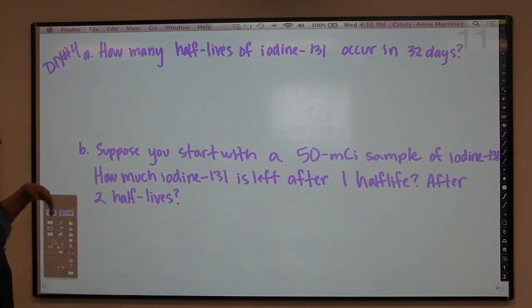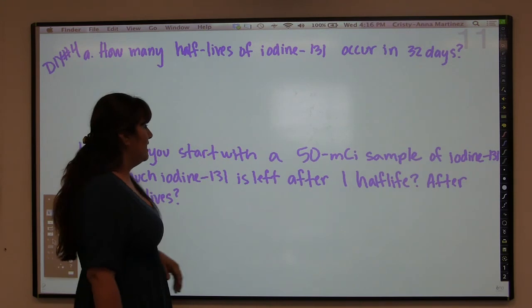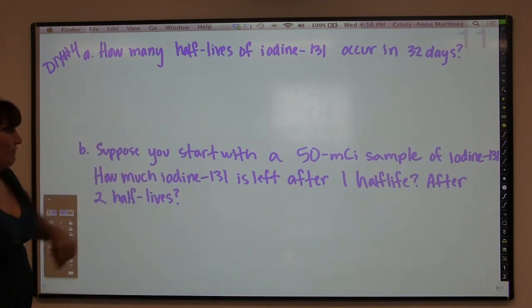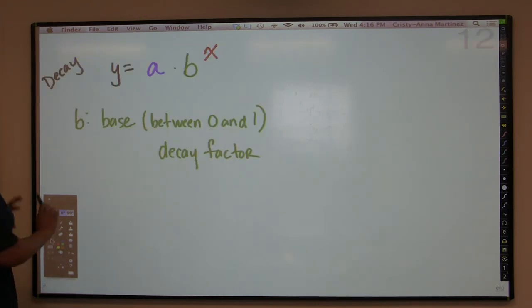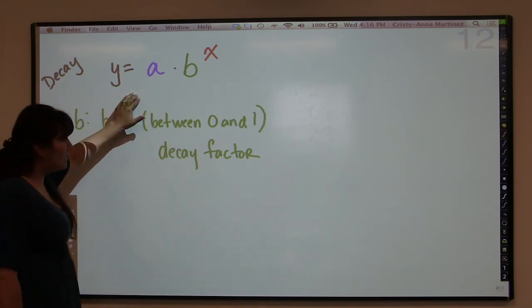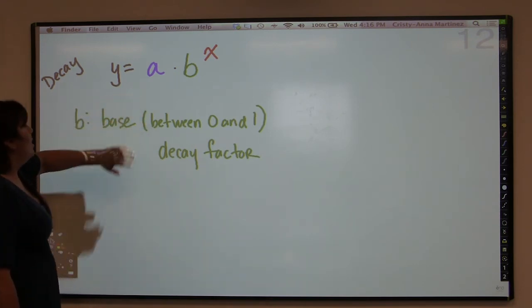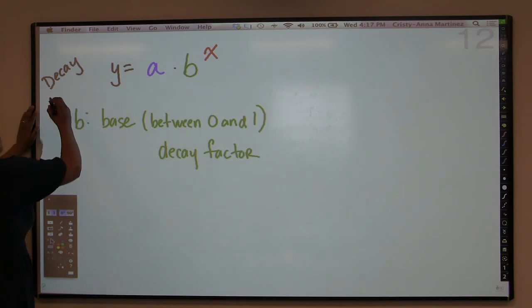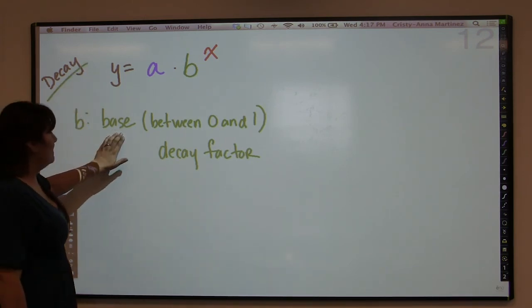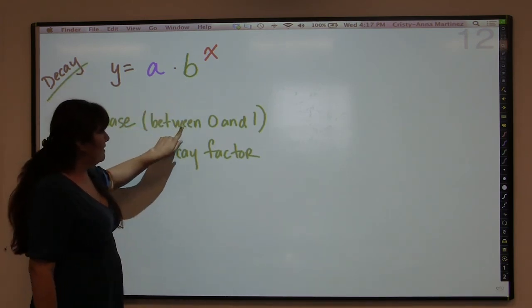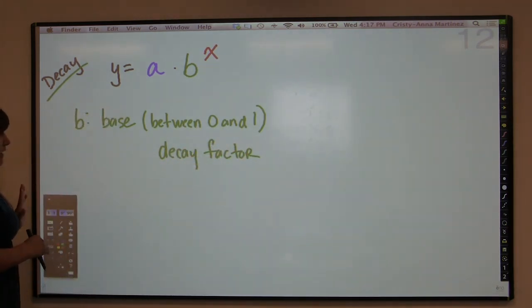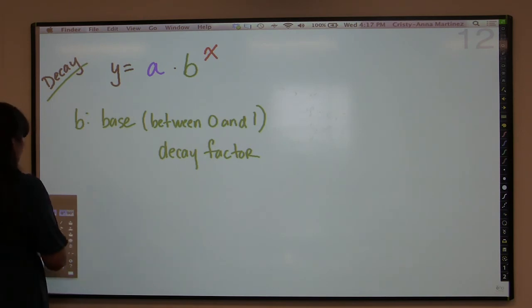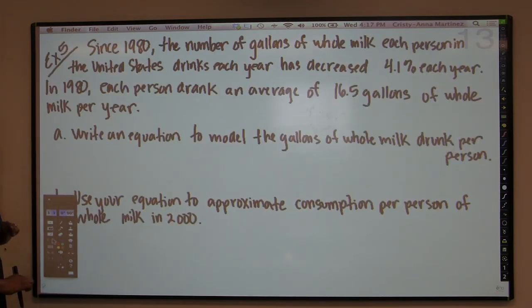Here's a half-life practice: how many half-lives of iodine-131 occur in 32 days, and if you have a sample of 50, how much is left? Now for the decay formula — it's the same formula y equals a times b to the x. To classify it as decay, the base B is between 0 and 1 — positive but smaller than 1 — and that's called the decay factor.